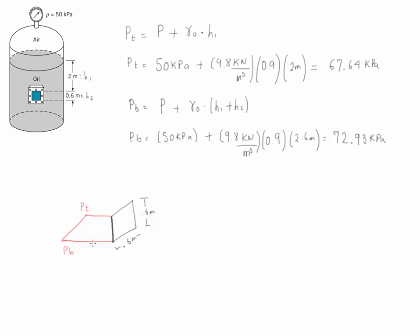Once we have that, we realize there are going to be two geometries in the pressure distribution: it is always going to be a triangle, which we'll call area one, and a rectangle, which is going to be area two. Then we're going to calculate the volume of each one of the sections, and that will allow us to calculate the resultant force. Let's start with section number one, which has a triangular cross-sectional area.